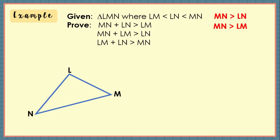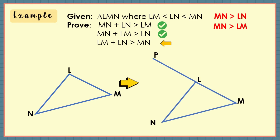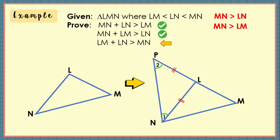Notice that MN is greater than LN and MN is greater than LM. Then it's obvious that the first two inequalities are true. Hence, what remains to be proven is the third statement: LM plus LN is greater than MN. For this example, we also need to add additional constructions. Let us construct segment LP as an extension of segment LM such that L is between M and P. LP is congruent to LN, and triangle LNP is formed with angles 1 and 2, and angle 3 is for triangle PNM.